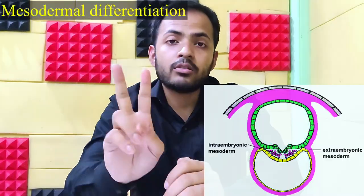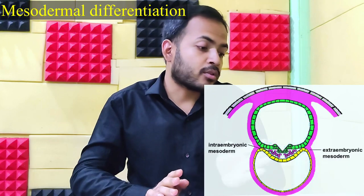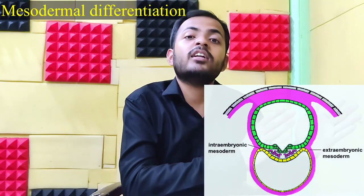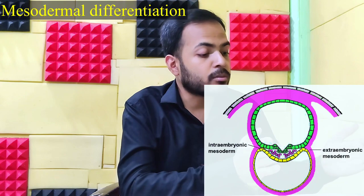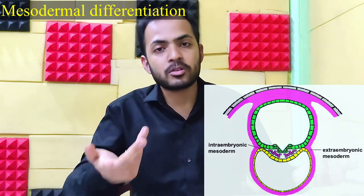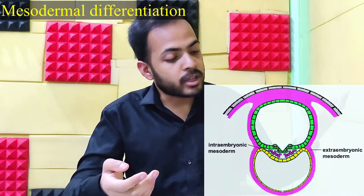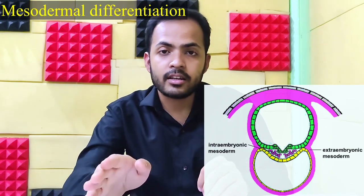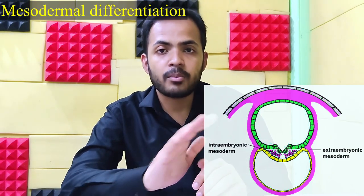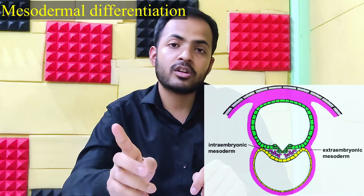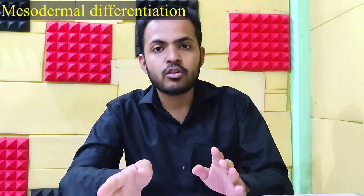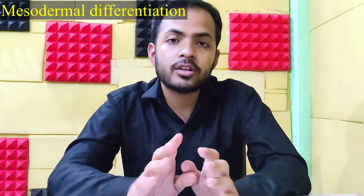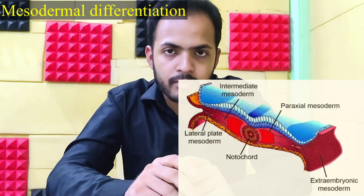Now for mesodermal differentiation — as you can see in this photo, the mesoderm present inside is called intraembryonic mesoderm and the part outside is called extraembryonic mesoderm. From the extraembryonic mesoderm you get superficial lining or superficial epithelium and subcutaneous tissue, so basically nothing of major importance. The main component is the intraembryonic mesoderm.